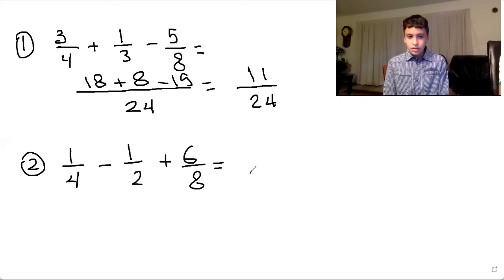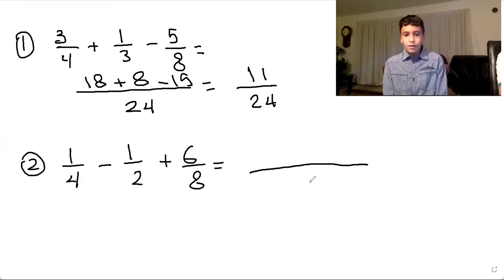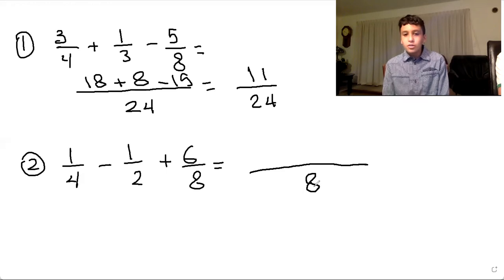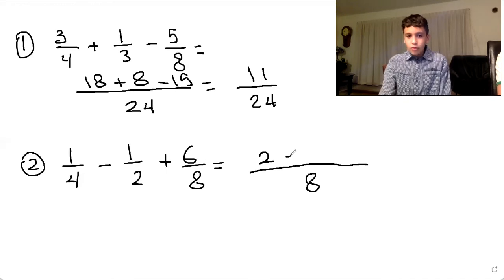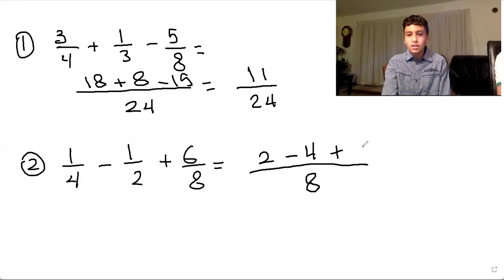For the second question, we put a long line. We look at the biggest number, which is eight, and we see if two and four can go into eight — and yes, they can. So eight is our lowest common denominator. So we do eight divided by four, which gives you two, times one, which gives you two. Then eight divided by two gives you four, and four times one gives you four. Then eight divided by eight gives you one, times six, which gives you six. Then put an equal sign.